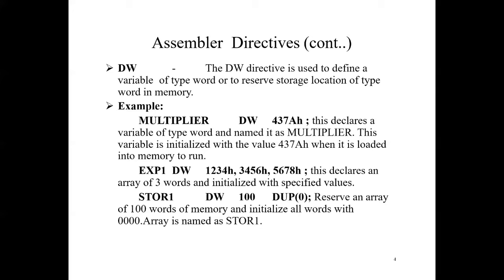Next is DQ (Define Quad Word). This directive defines a quad-word type variable which occupies eight bytes of consecutive memory locations. If there is only one value, eight bytes are reserved; if there are multiple values, eight bytes are reserved for each. General format: name DQ initial_value(s). Example: 'number DQ 1568934893846735' — this directive informs the assembler to reserve eight bytes for the variable named 'number' and initialize it with the above value. Other examples are similar to those given for DB and DW.